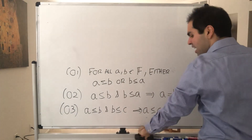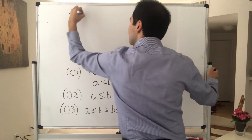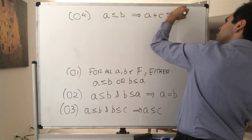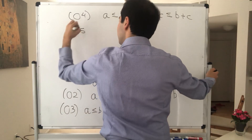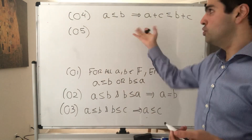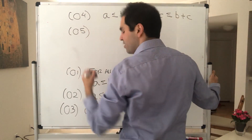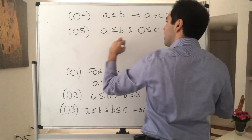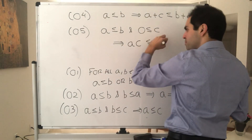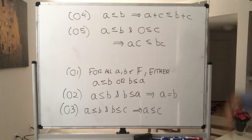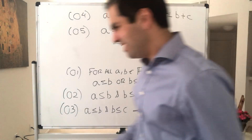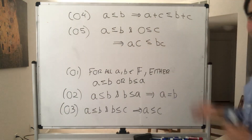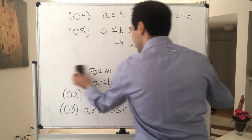Addition doesn't affect inequalities. So A ≤ B implies A + C ≤ B + C. Those properties are hopefully obvious to you — the whole point is to mimic what the real numbers are.